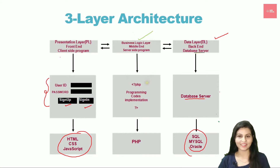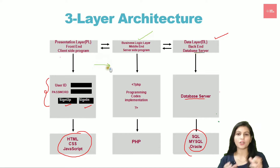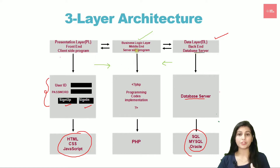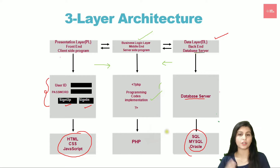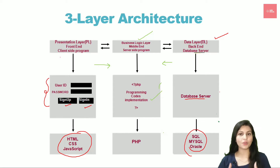The next layer is the very important one — the business logic layer. This is the middle layer which actually connects your client with your server, or your front end with your back end. All the logic that you write using any programming language — be it PHP, Java, Node.js, or Python — is written in this layer, connecting the database data with the front end UI. This is where PHP goes.